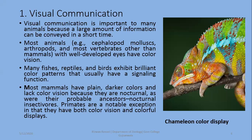Mammals are very dependent on their vision for signaling, communication, and information flow. Many fishes, reptiles, and birds exhibit brilliant color patterns that usually have a signaling function. Most mammals have plain dark colors and lack color vision because they are nocturnal. Animals that in their evolution were active at night lack color vision, while those whose ancestors were active in the daytime have developed color vision.